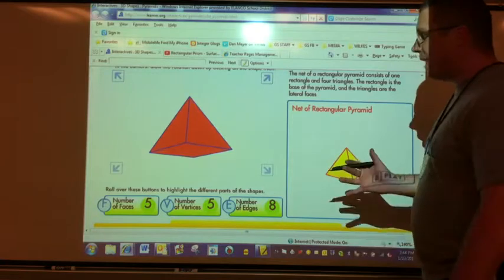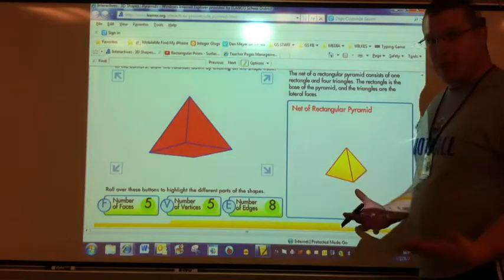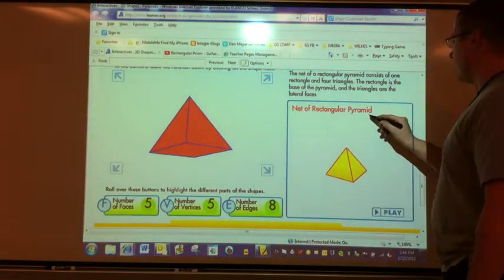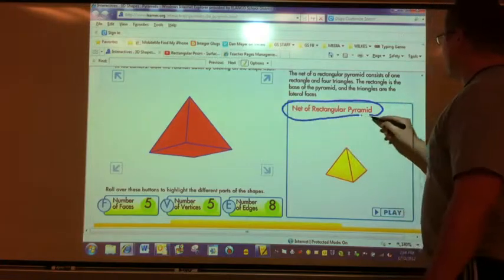Our next shape we're going to take a look at is a rectangular pyramid. It's just a regular pyramid, things that we're used to seeing in the Egyptians.